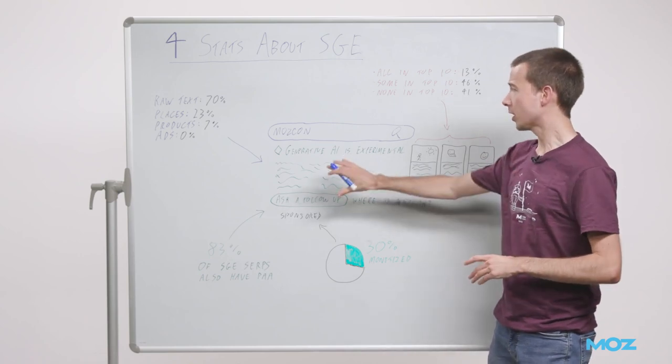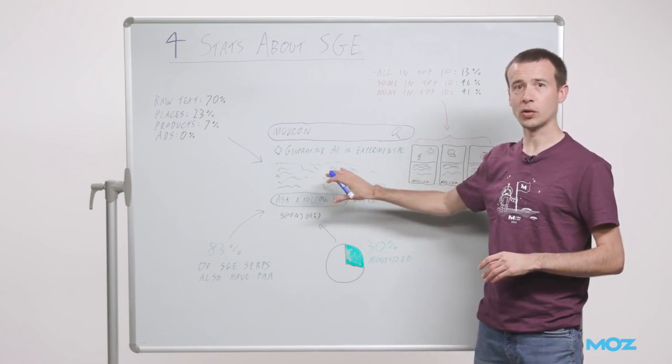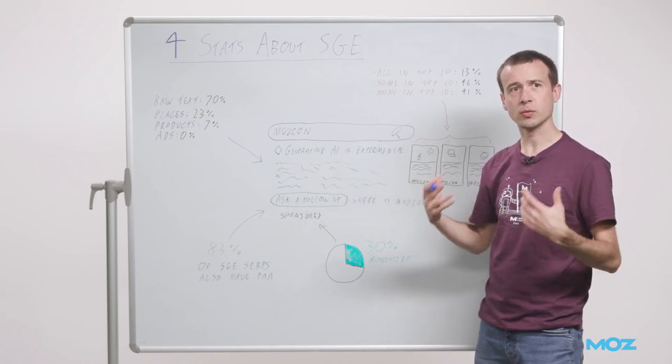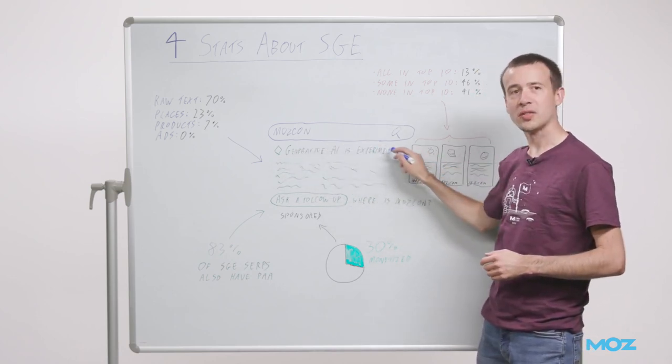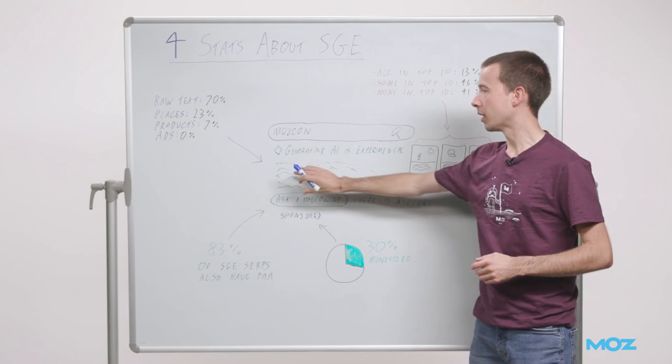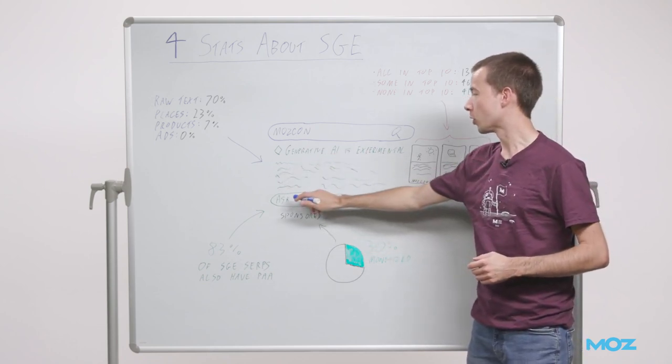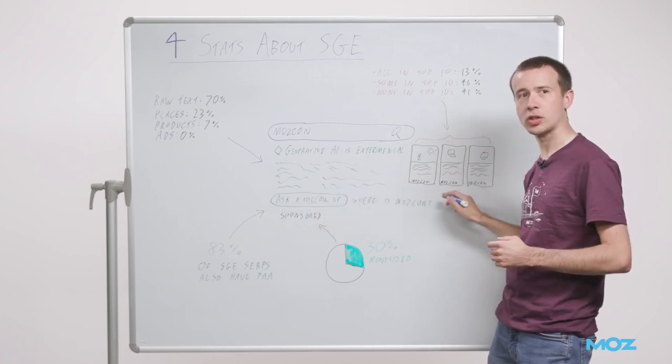The basic structure of the SGE is it's stuck onto the top of a search engine results page above all the other results and SERP features. You've got a little warning that generative AI is experimental, then a block of content, normally text.